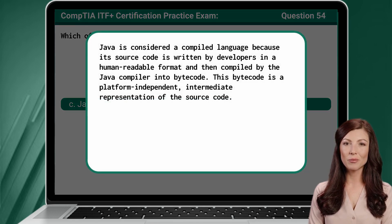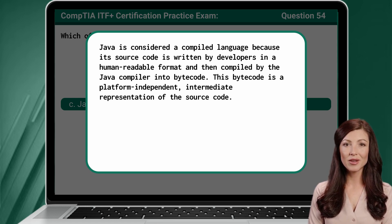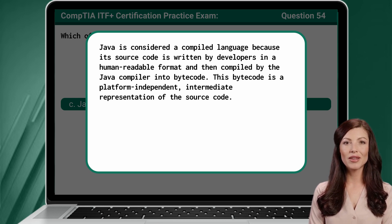Java is considered a compiled language because its source code is written by developers in a human-readable format and then compiled by the Java compiler into bytecode. This bytecode is a platform-independent, intermediate representation of the source code.